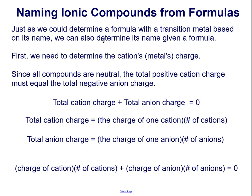Naming ionic compounds from formulas. Just as we could determine a formula with a transition metal based on its name, we can also determine its name given a formula, but first we need to determine the cation's charge. Since all compounds are neutral, the total positive cation charge must equal the total negative anion charge. That's stated algebraically as: total cation charge plus total anion charge equals 0, which expands to: (charge of one cation × number of cations) + (charge of one anion × number of anions) = 0.